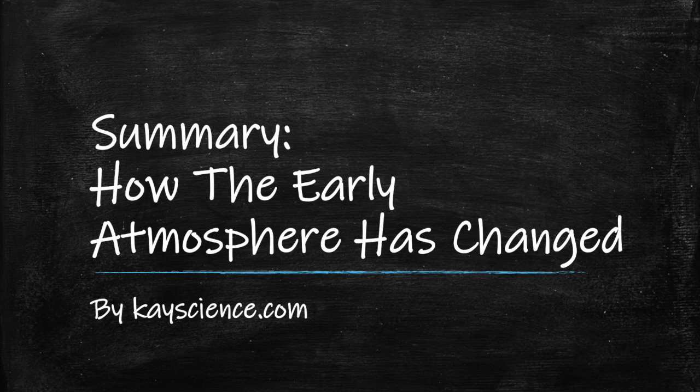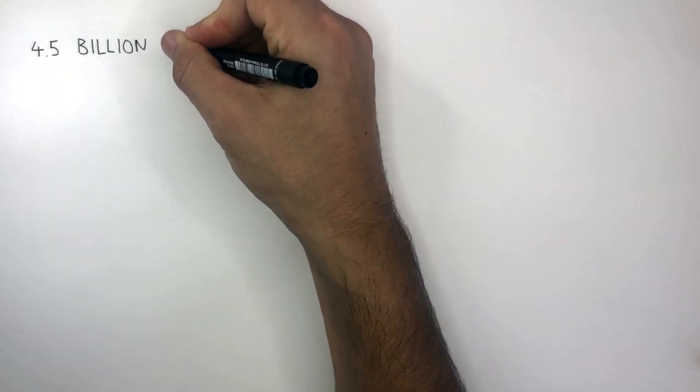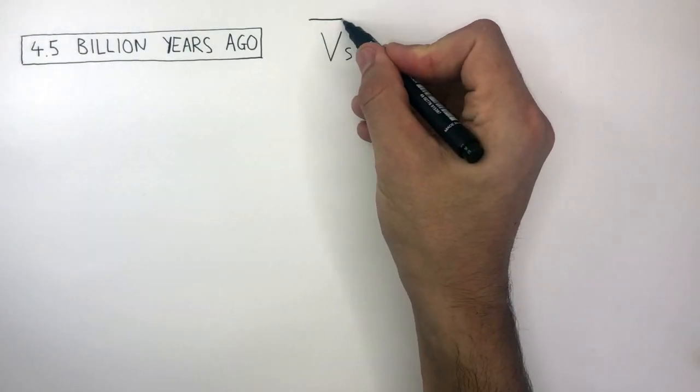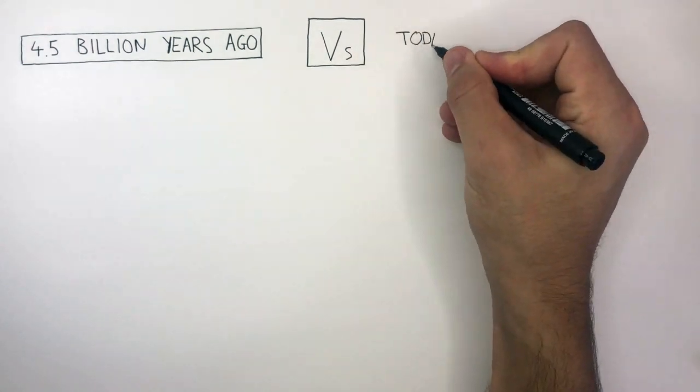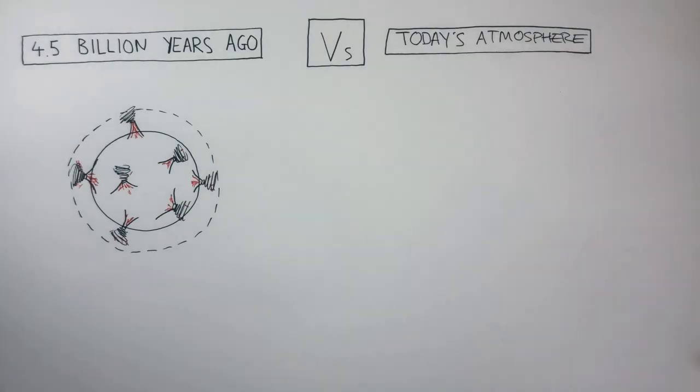A summary of how the early atmosphere has changed. 4.5 billion years ago, the Earth's atmosphere was very different to today's atmosphere.